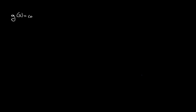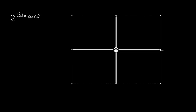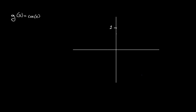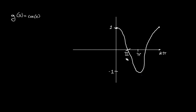Now let's look at our cosine curve: g(x) = cos(x). The cosine curve is very similar to the sine curve — there's actually just a little shift. It still has an amplitude between 1 and −1, but instead of starting at (0, 0), the cosine curve starts at (0, 1) and comes down. It then bounces back up, completing one full period at 2π. Dividing 2π in half gives π, dividing π in half gives π/2, and halfway between π and 2π is 3π/2.